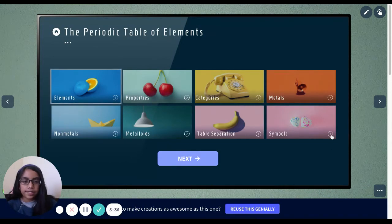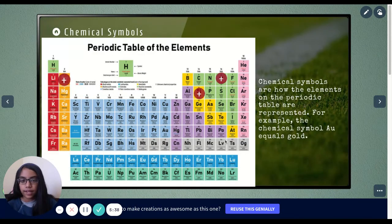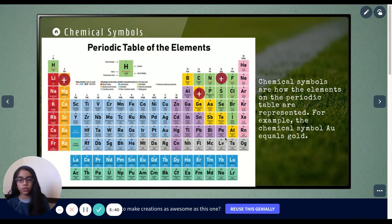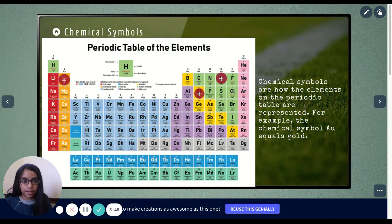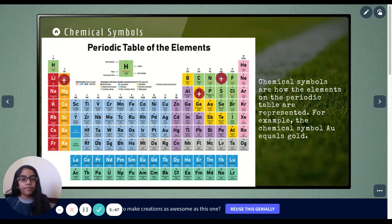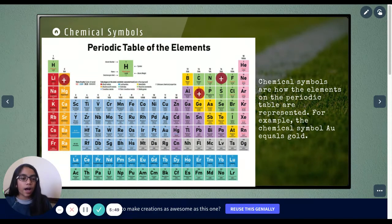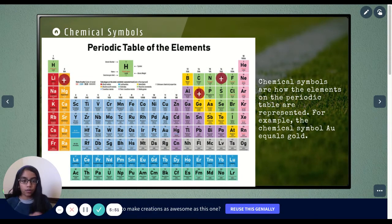Now, symbols. As you can see, you're probably confused why there's so much different symbols here, and why doesn't it say the actual name of the element. But, chemical symbols are how the elements on the periodic table are represented.